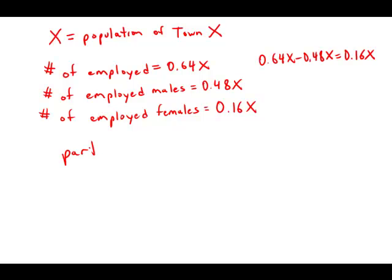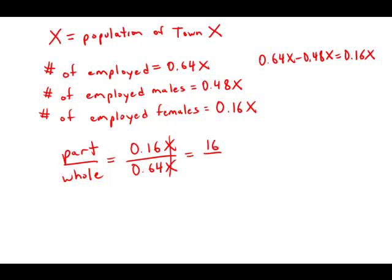When we consider our part over whole ratio, the part we're thinking of is .16X. But the whole we're thinking of is all the employed people. Of all the employed people, how many are female? We cancel the X's and move the decimal place two places over, so we get 16 over 64. This simplifies to 1 over 4, because 16 goes into 64 four times. One fourth is 25%, and this is answer choice C.